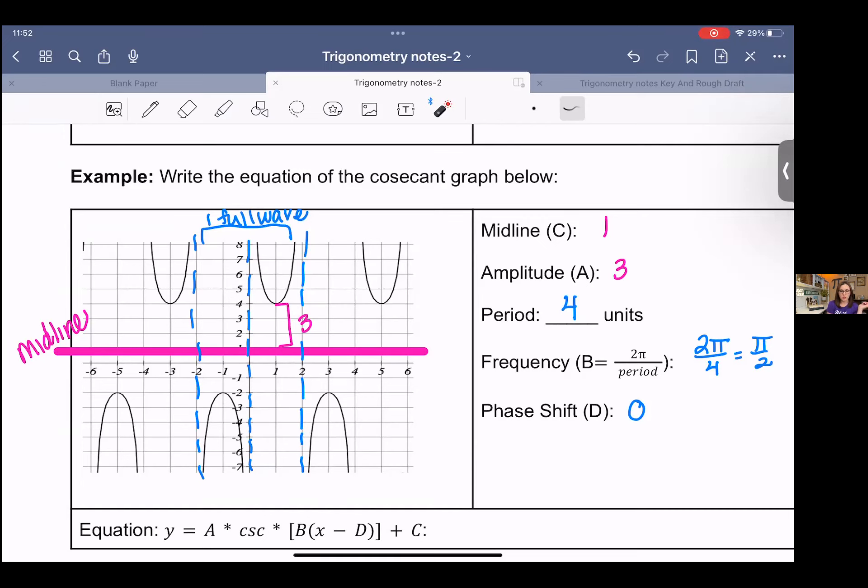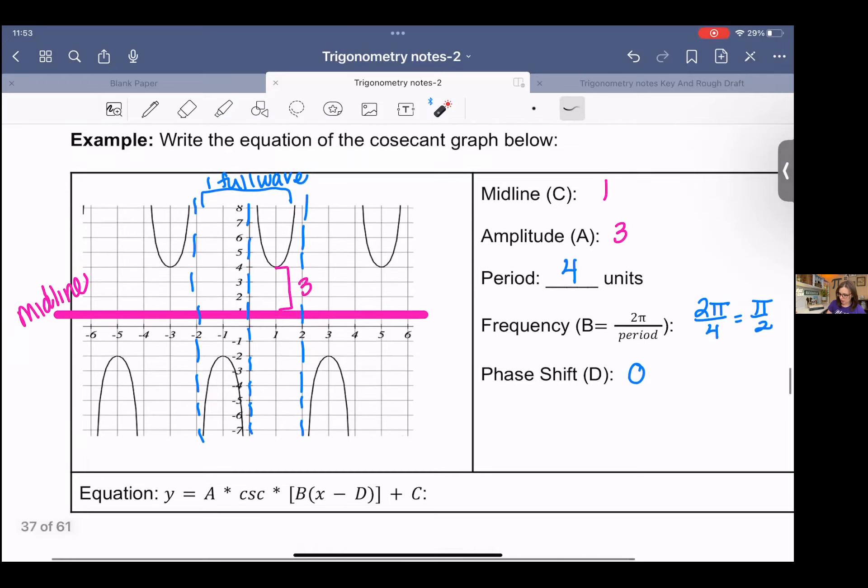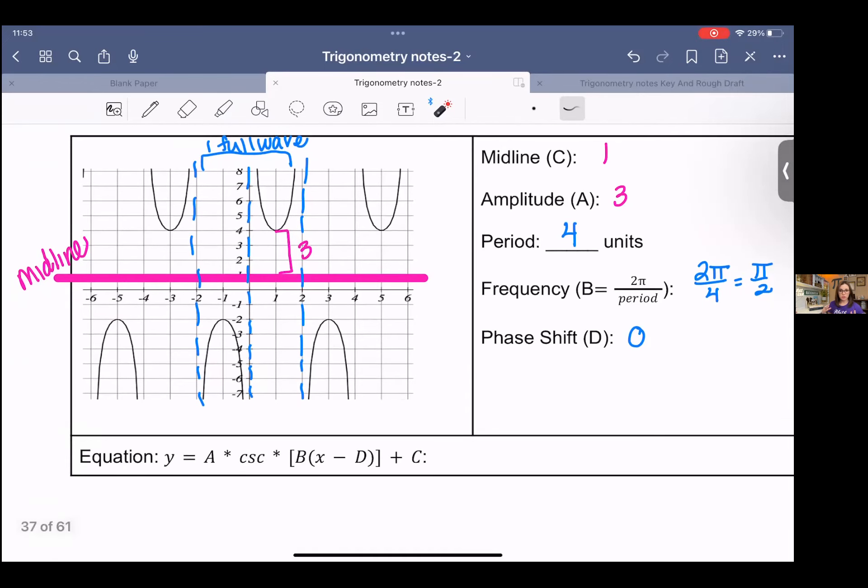And then this has a phase shift of zero. Remember that cosecant is the reciprocal function of sine. And so if we were to draw sine in here, the associated sine function for this one, they would meet, the curves would meet there like that. So this follows the sine function. It's not shifted over to the left or to the right any.